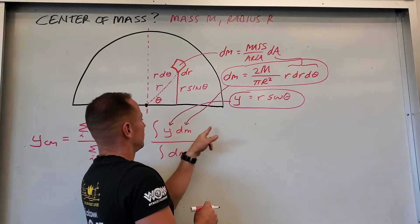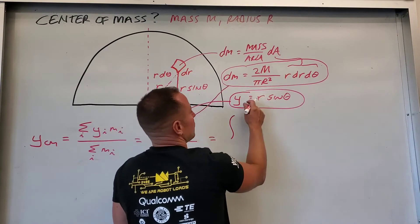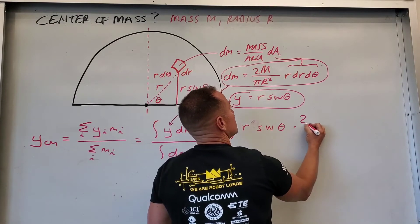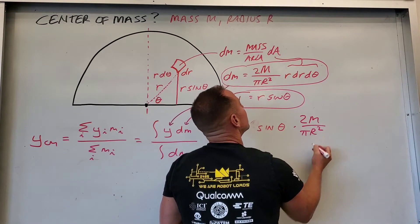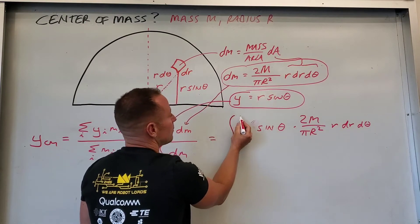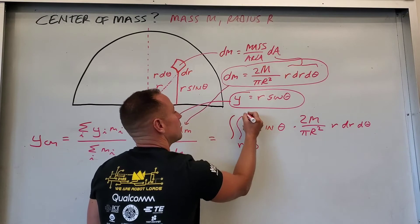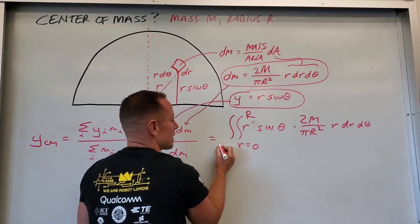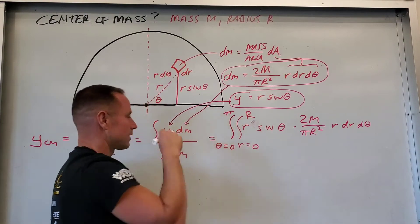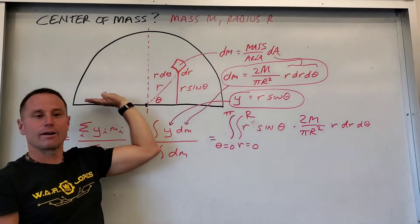And so what we need to do then is we'll have the integral of y times dm. Well our y coordinate is r sin θ. Our dm is 2m over π r squared, little r d little r dθ. Now you realize we're wiggling two variables there, so this is going to become a double integral. We're going to integrate from little r equals 0 all the way out to the full radius of the thing. And we're going to integrate from θ equals 0, we're going to sweep from here all the way over to π. So the radial coordinate goes from 0 all the way out. The θ coordinate goes from 0 to π or 180 degrees.